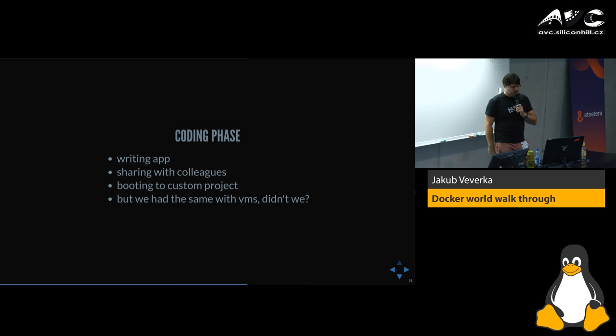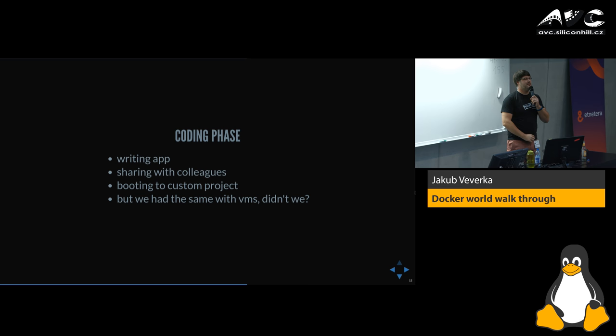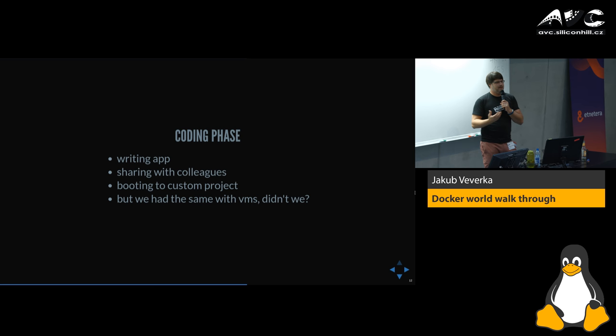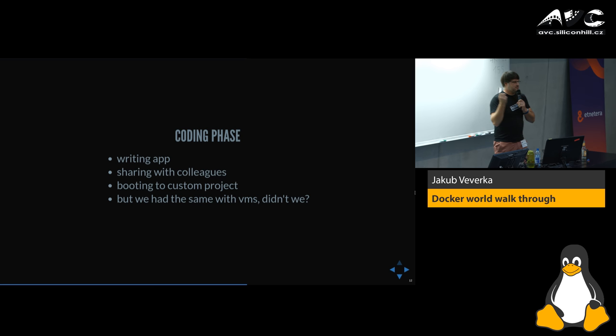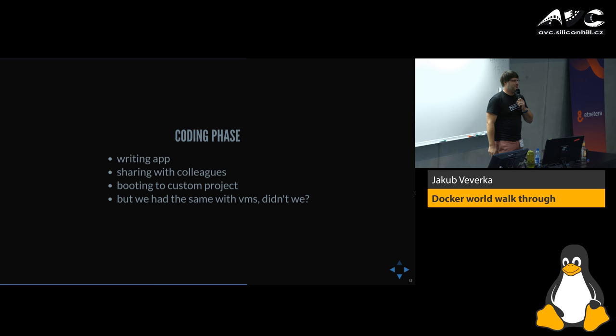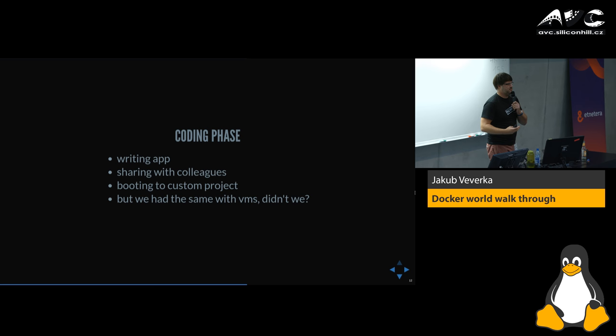We had the same thing with virtual machines, right? There was Vagrant — HashiCorp's first tool. We had the same possibility with Vagrant, but what Docker made much easier is accessibility. Anytime you want to start an application in a container, you just do 'docker run' and it starts. If you do 'vagrant up', it just takes considerably longer and is more complex to configure.